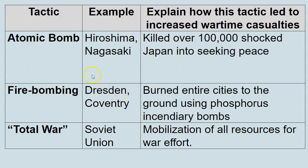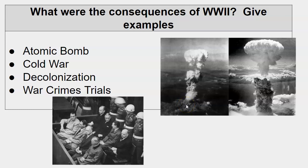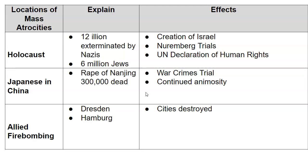Some tactics and consequences — atomic bombs killing large numbers of people. Falling short of that, firebombing of Dresden and Tokyo, basically burning cities to the ground. Total war means the mobilization of all resources for the war effort. Home fronts play a big role — in the U.S., rationing, selling war bonds, and women taking a big role in filling jobs. Consequences include the atomic bomb, Cold War, decolonization, war crimes, and mass atrocities — we've done these in class, so make sure you pause and get the notes off this page.